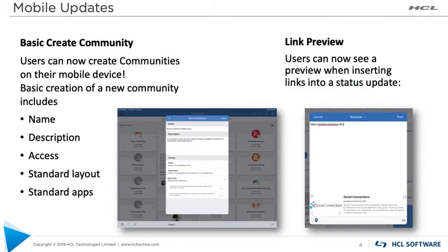Let's shift gears and talk about the basic create community on mobile. I recorded a full video on this capability alone, which will be available on YouTube shortly, that goes through all the capabilities. You've always been able to create a community in Connections through the browser on your desktop, but this was not available on mobile — and we just added that. Now on a phone or tablet, you can go to the community catalog page, click the plus sign on the iPad or the menu behind the three dots on the phone, and hit create community, providing name, description, and what type of access should be managed. Connections will then create the community using the standard layout and the defined set of standard apps. This is the first release of this capability, so keep an eye out for improvements coming in this area at a later time.